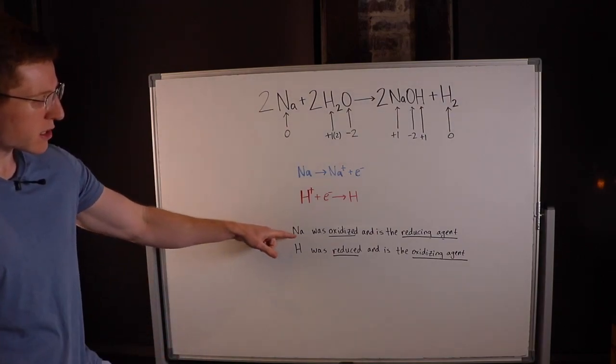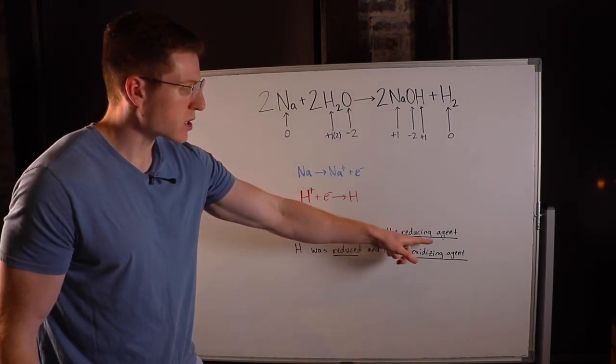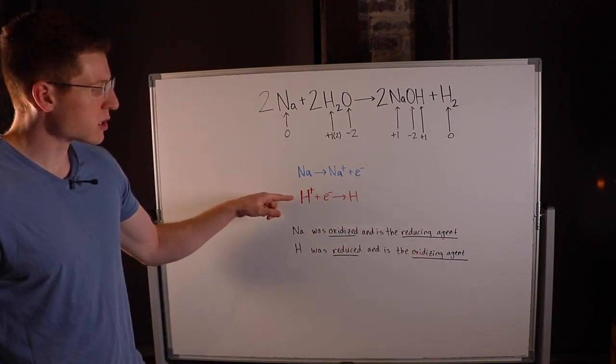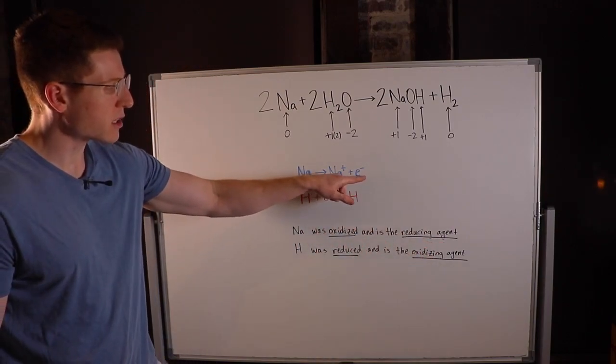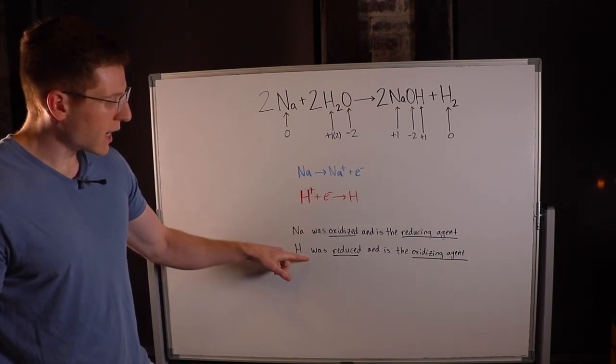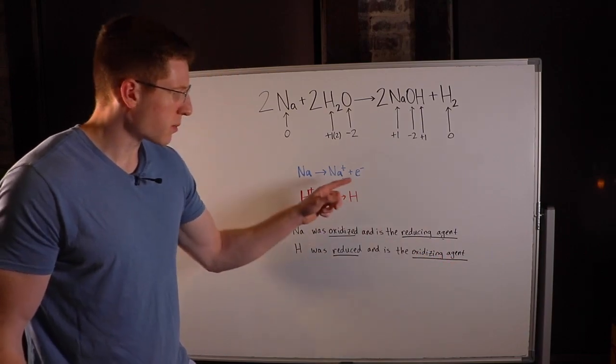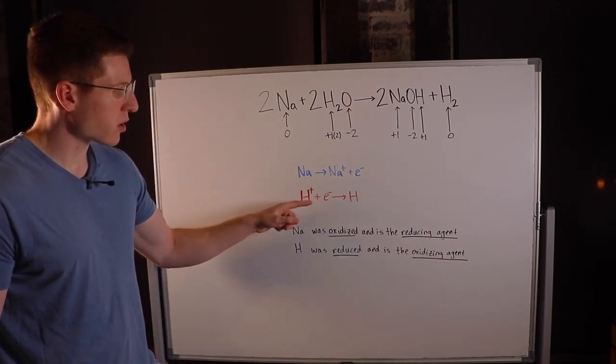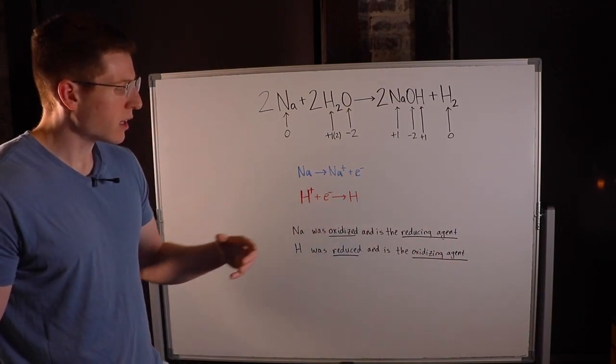We can say that sodium was oxidized and thus must have been the reducing agent because it reduced hydrogen. It provided this electron that was able to reduce the hydrogen. Conversely, hydrogen was reduced and it is the oxidizing agent because it accepted this electron from sodium and allowed it to be oxidized.